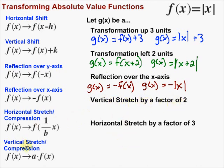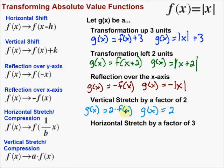A vertical stretch by a factor of two uses the recipe a times f(x), where a is the factor. So g(x) is equal to two times f(x). f(x) is the absolute value of x, so it's just two times the absolute value of x. That two cannot jump inside with the x — it stays as two times f(x) on the outside.